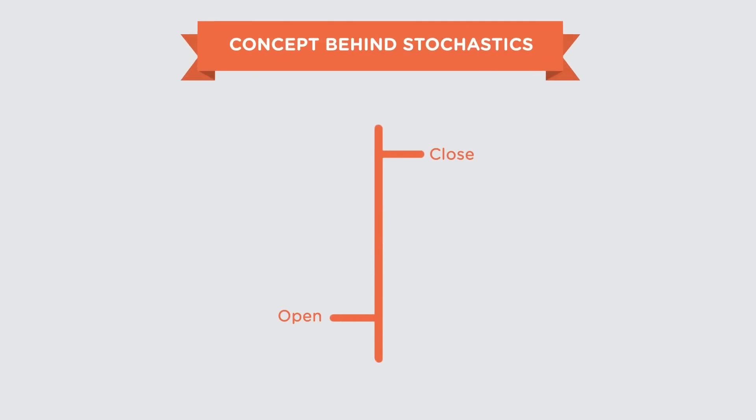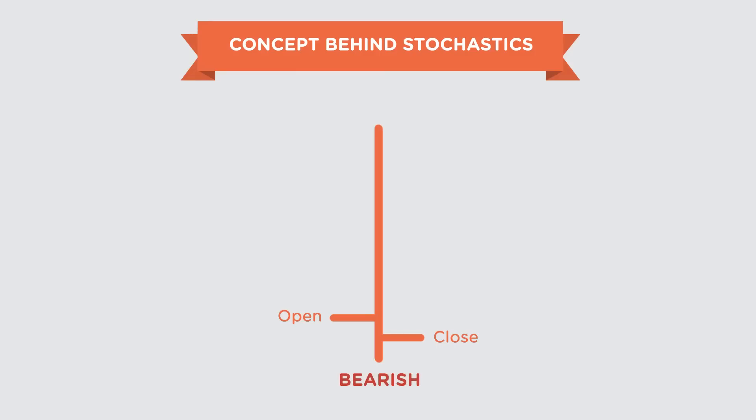Unlike the RSI, which calculates a security's price momentum by subtracting its close price from the last few days, the stochastic compares whether the stock has closed near the high of the day or not. A close near the high suggests bullishness and a close near the low suggests bearishness. The comparison is usually done over a long period of time.